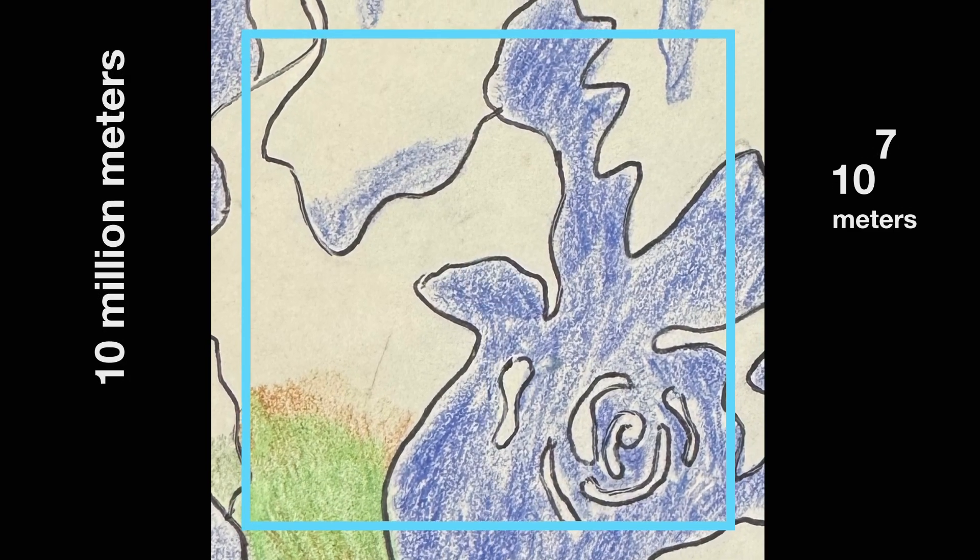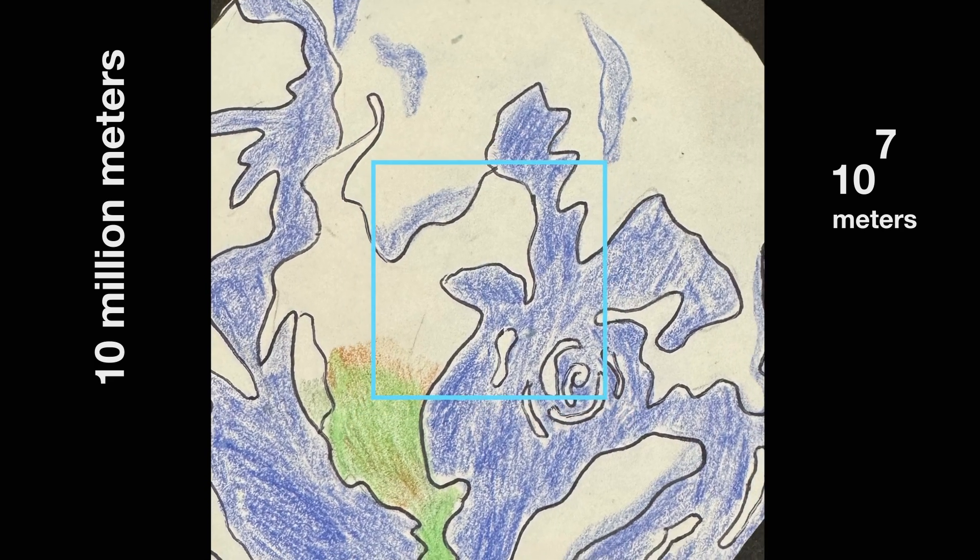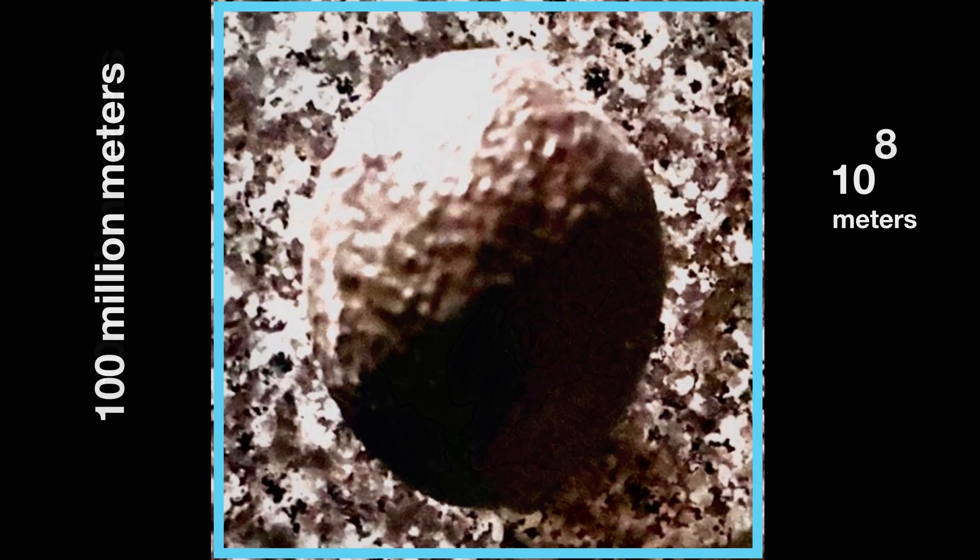The entire earth can now be seen. 97% of the earth's water can be found in the oceans. We take the health of oceans for granted, but they are under severe stress from pollution and acidification.